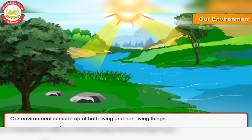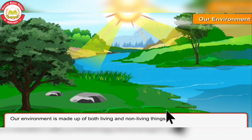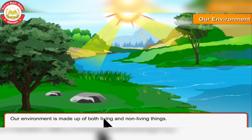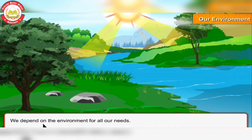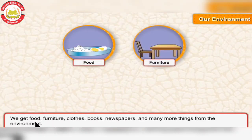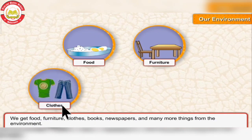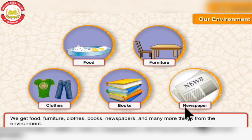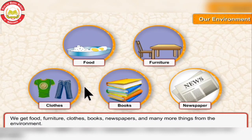Our environment is made up of both living and non-living things. We depend on the environment for all our needs. We get food, furniture, clothes, books, newspapers, and many more things from the environment.